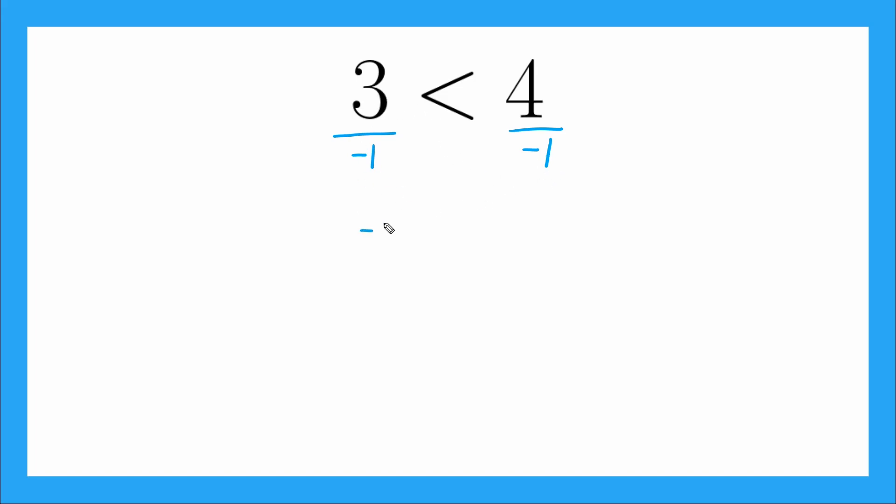But what am I left with? Well, this will turn to negative 3 is less than negative 4. Wait, is this true? Is negative 3 less than negative 4? That's not true. Negative 3 is actually greater than negative 4.